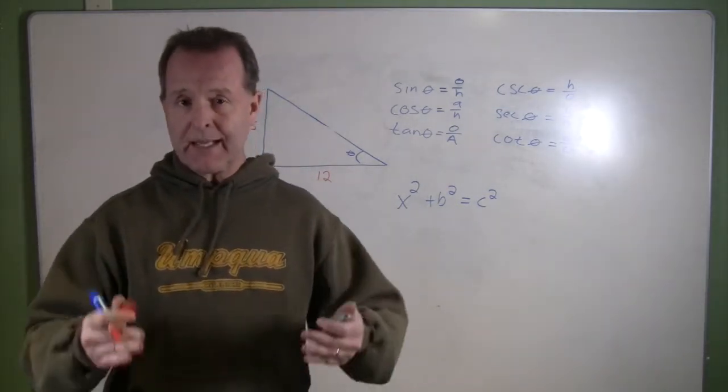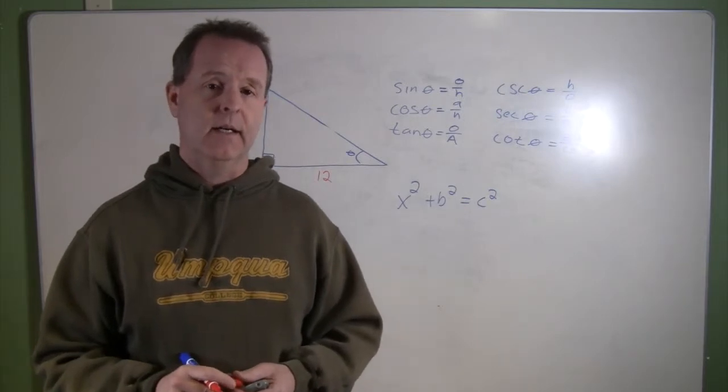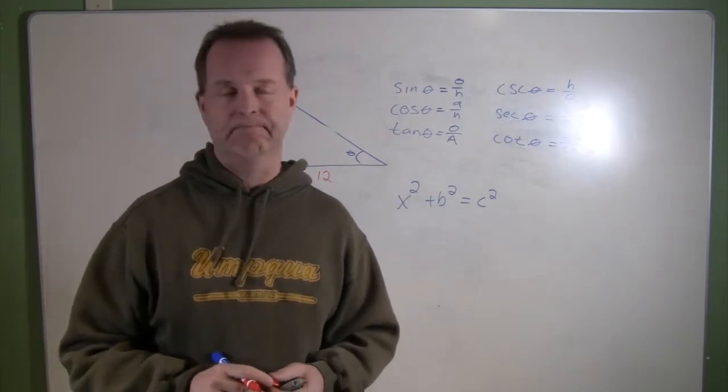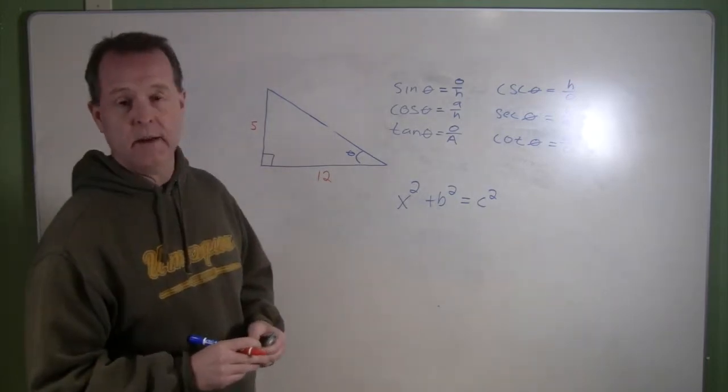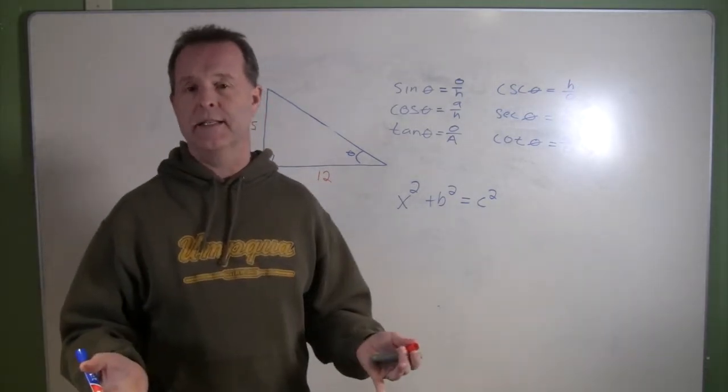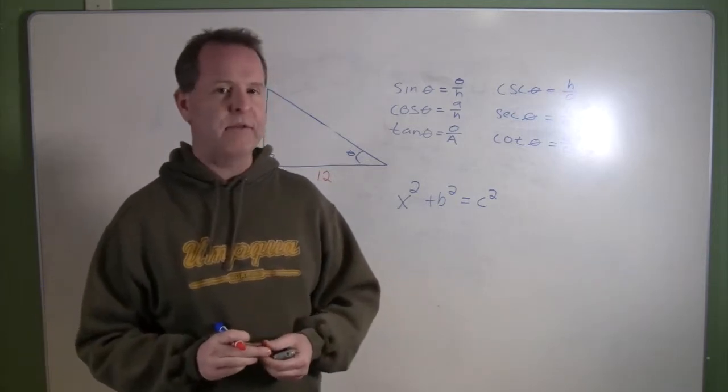So given that information, can I determine the six trigonometric functions? Well, in order to do that, I need to know the length of each of the three sides. I have two of them, I don't have the third.